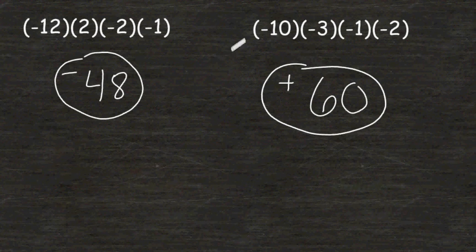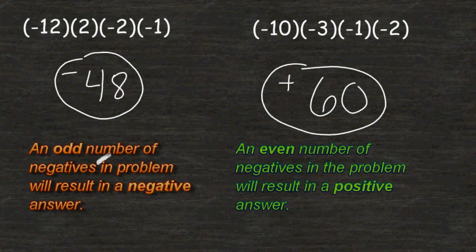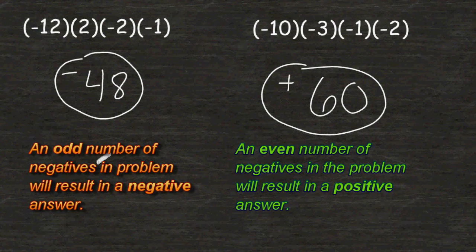So just remember, when you have an odd number of negatives within the problem, your answer will be negative. And when you have an even amount of negatives within the problem, your answer will be positive.